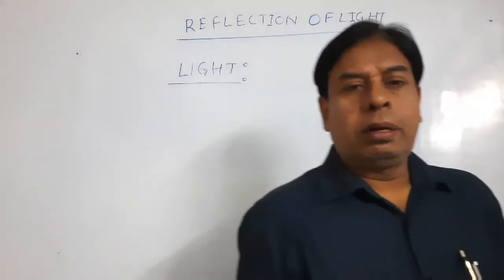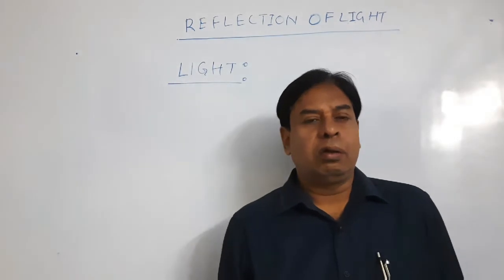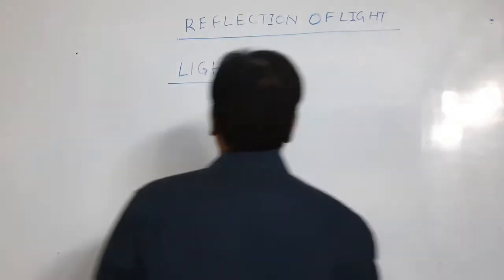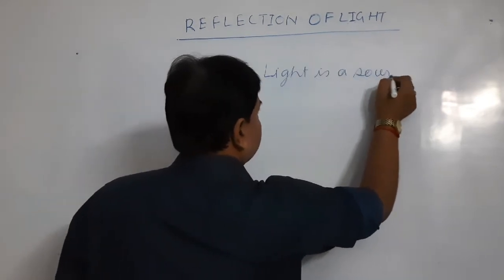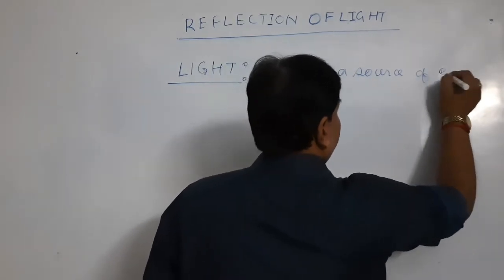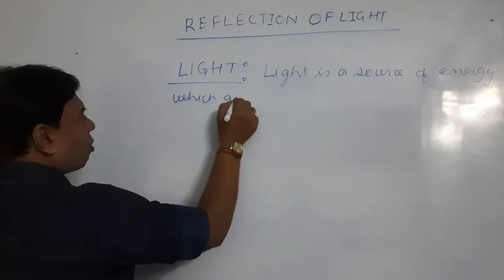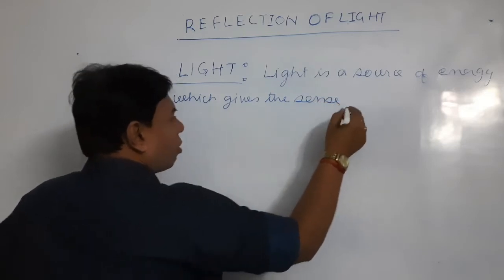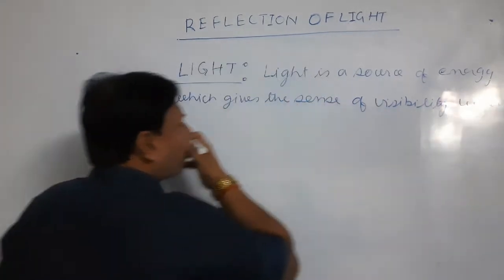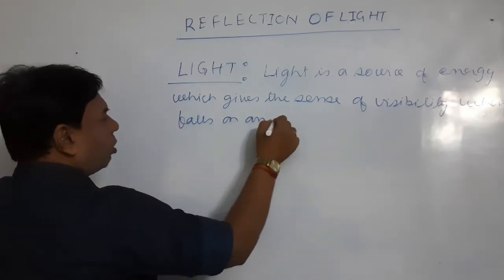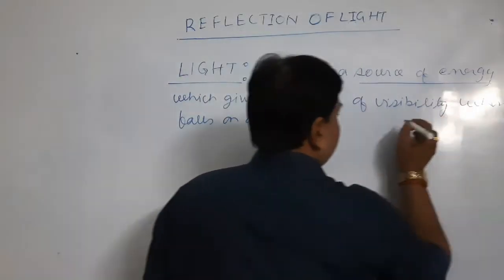As we know, light is a source of energy that gives the sense of visibility when it falls on an object. Two key things: one, light is a source of energy; second, it gives a sense of visibility.